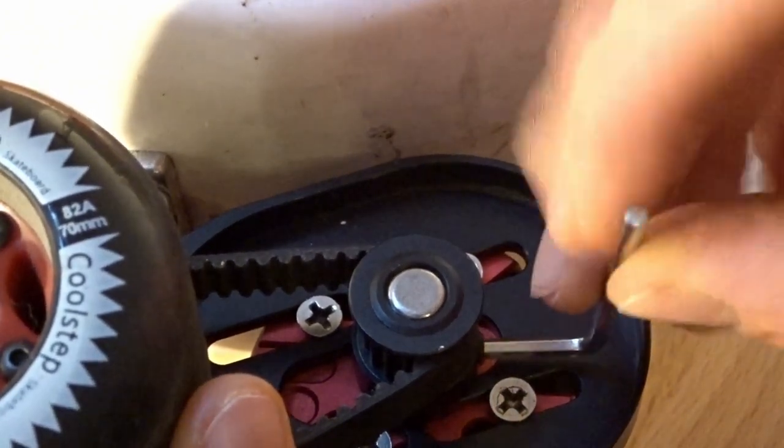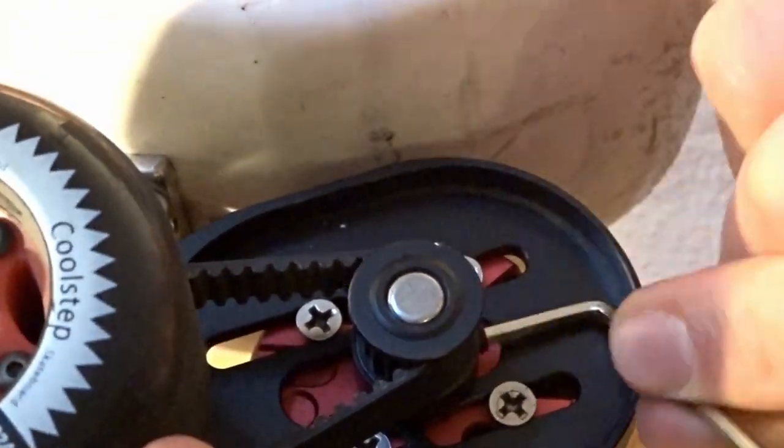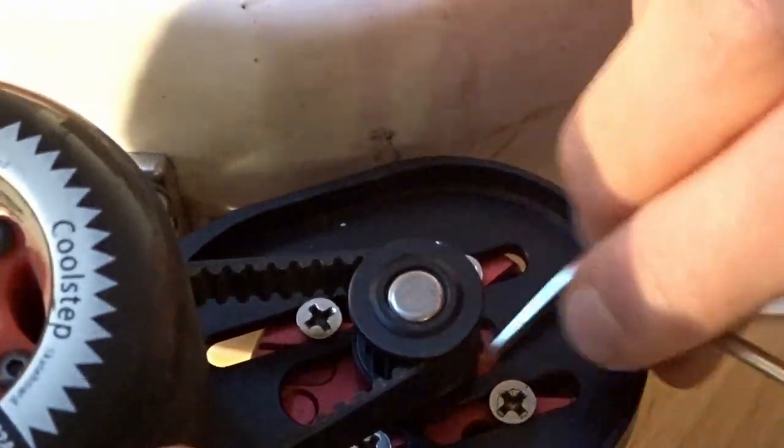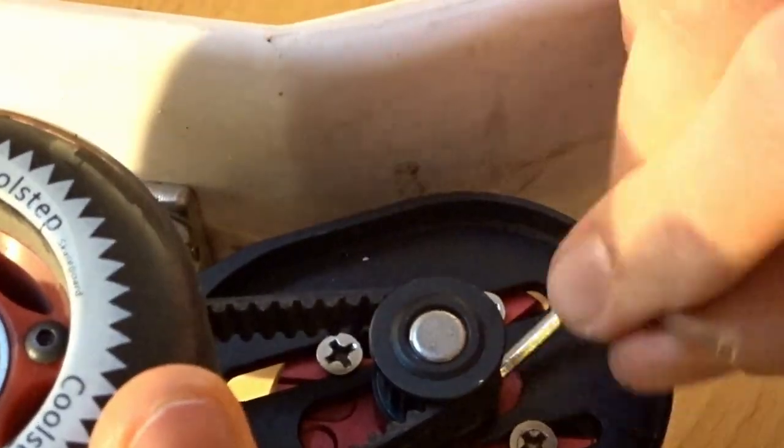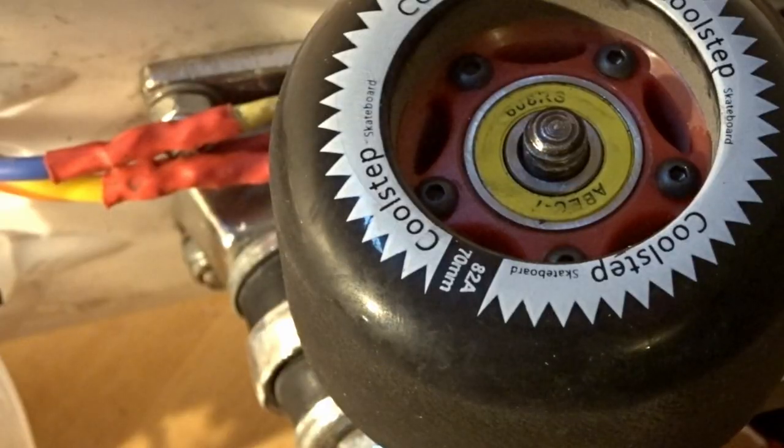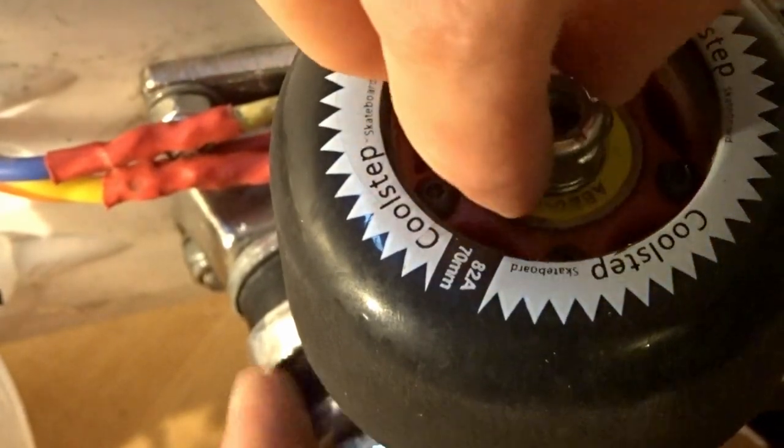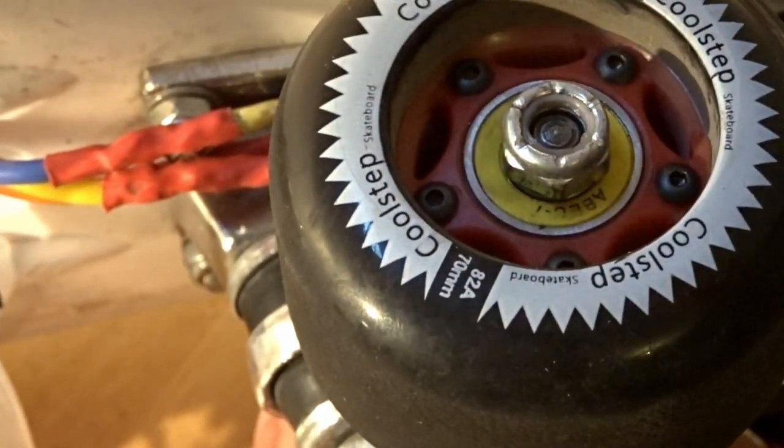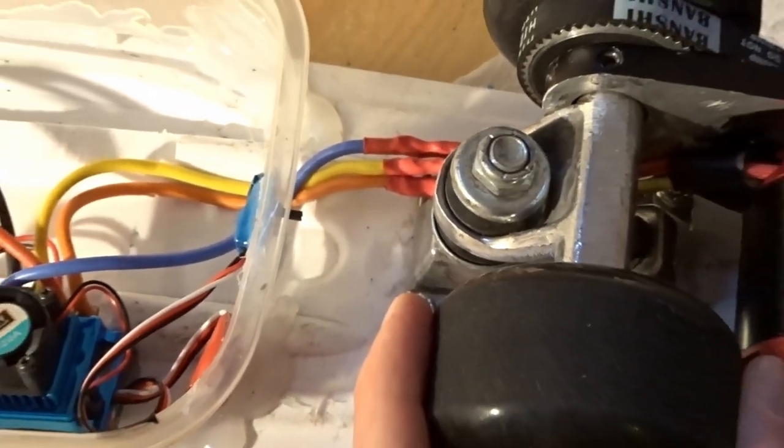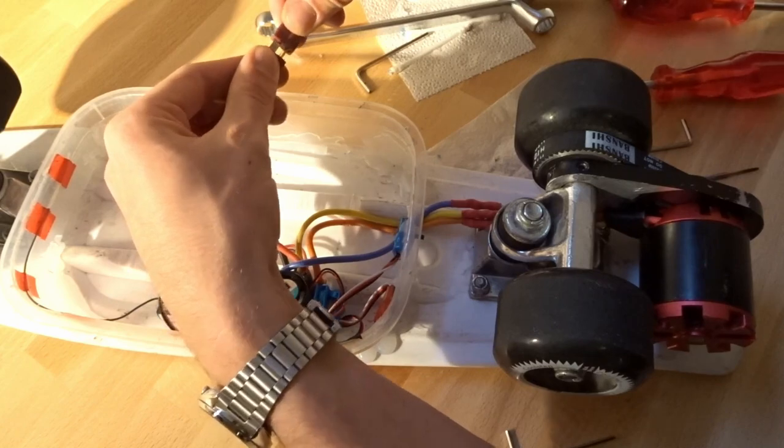You put it inside and tighten. So the last thing to do is put the last nut in the wheel.